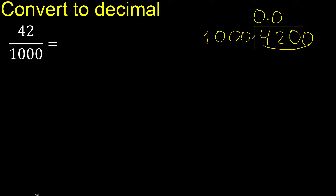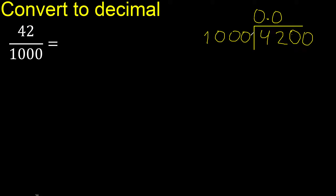Is not less. 1000 multiplied by which number is nearest to this number? Multiplied by 5 is 5000 — is greater. Multiplied by 4 is 4000 — is not greater.